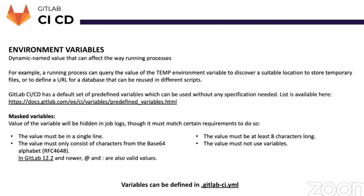This link can be used to view the list of available predefined values. The most commonly used and important ones include commit reference name, commit branch, commit tag, and external pull request IDs. These variables allow you to shape your pipelines according to different branches, providing great flexibility in differentiating jobs based on the environment.